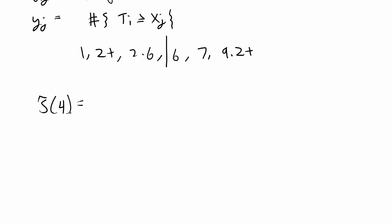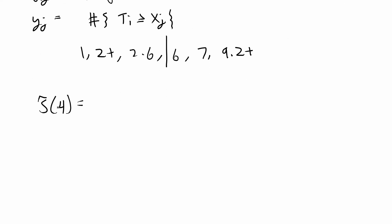We have two events that happen up to time 4. We have an event that happens at t equals 1 and an event that happens at t equals 2.6. x1 where j equals 1 is going to be equal to 1, and x2 where j equals 2 is going to be 2.6.